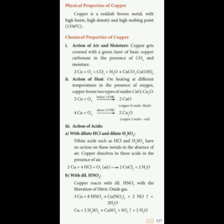Now for the chemical properties of copper. The first and most important is the action of air and moisture. Copper gets covered with a green layer of basic copper carbonate in the presence of carbon dioxide and moisture. When copper (Cu) reacts with atmospheric oxygen (O₂), CO₂, and water, it forms a green substance — basic copper carbonate and copper hydroxide — with formula CuCO₃·Cu(OH)₂.